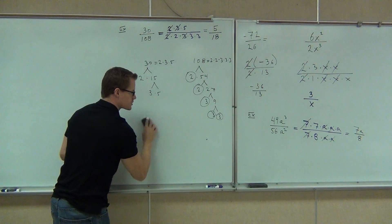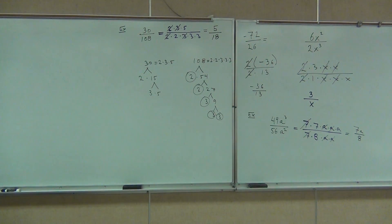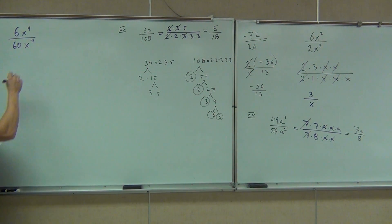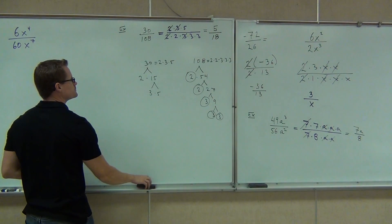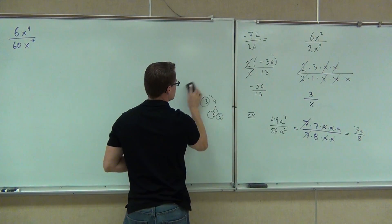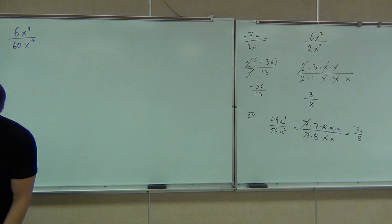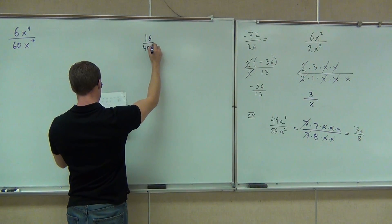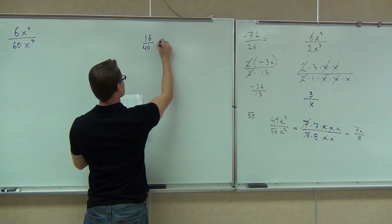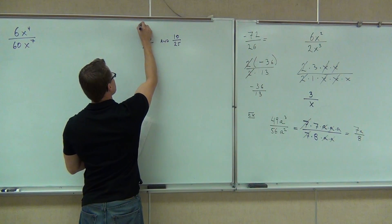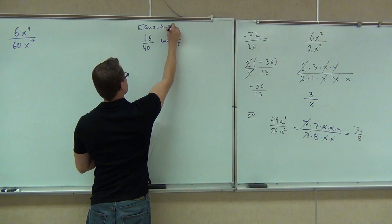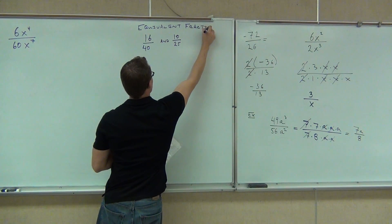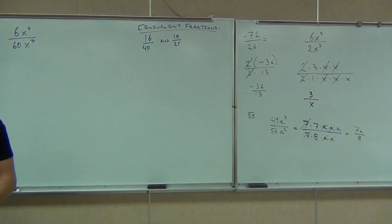Okay, let's try one on your own. We'll talk about equivalent fractions for just a second and be done for today. Let's do six x to the fourth over 60 x to the fifth.